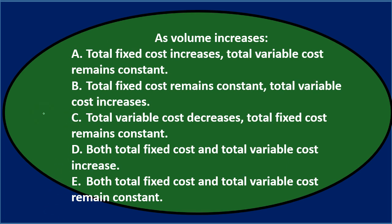Next question: As volume increases, A. total fixed costs increase, total variable costs remain constant. B. total fixed costs remain constant, total variable cost increases. C. total variable cost decreases, total fixed costs remain constant. D. both total fixed costs and total variable costs increase. E. both total fixed costs and total variable costs remain constant.